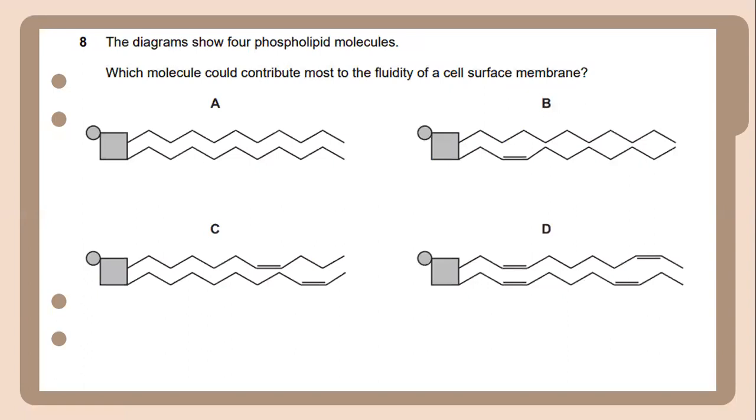The diagram shows four phospholipid molecules. Which molecule could contribute most to the fluidity of a cell surface membrane? The answer will be D.